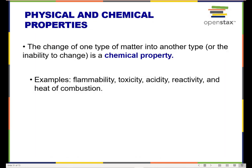A chemical property is one in which the type of matter does change. Examples of chemical properties are flammability, toxicity, acidity, reactivity, and heat of combustion. To determine whether a substance is flammable, I have to light it on fire, and before and after it's lit it is a different substance — the substance has changed. So if I have to change the substance to see a property, then that must be a chemical property.